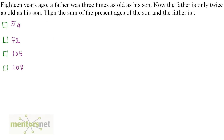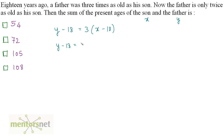Let's move on to the third question. 18 years ago, a father was three times as old as his son. Now the father is only twice as old as his son. Then the sum of the present ages of the son and the father is? Let the present ages of the son and father be x and y. 18 years ago, y minus 18 is equal to three times x minus 18. Solving: y minus 18 equals 3x minus 54, so y equals 3x minus 36.